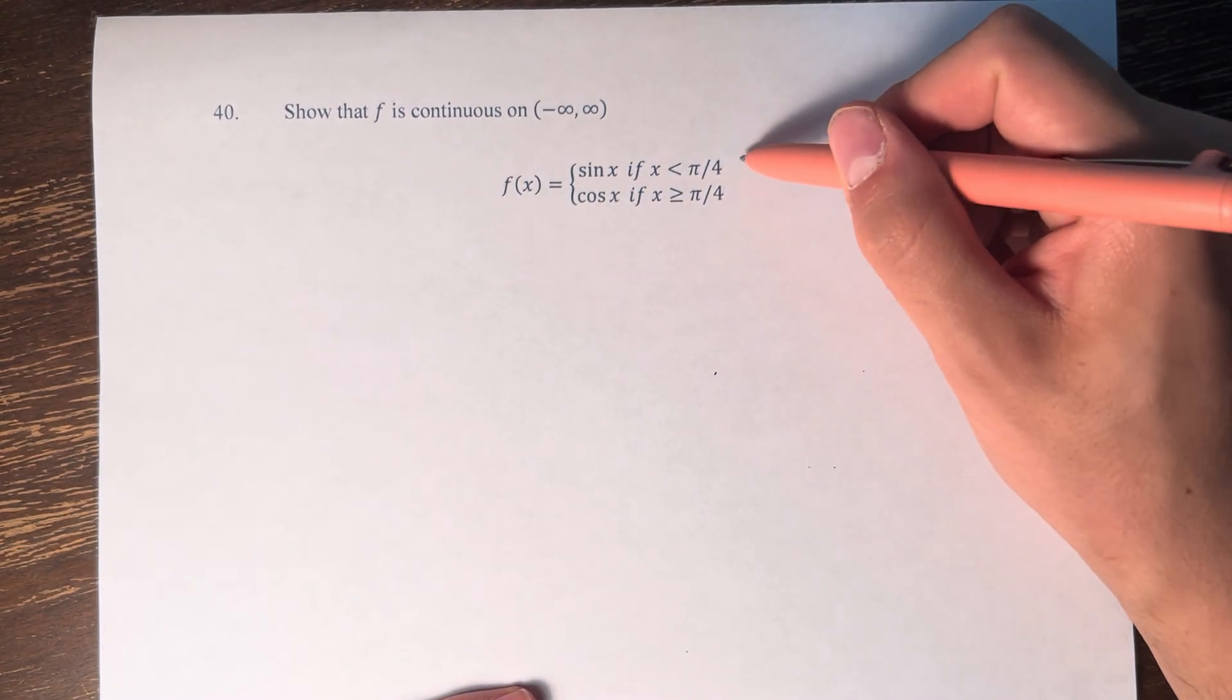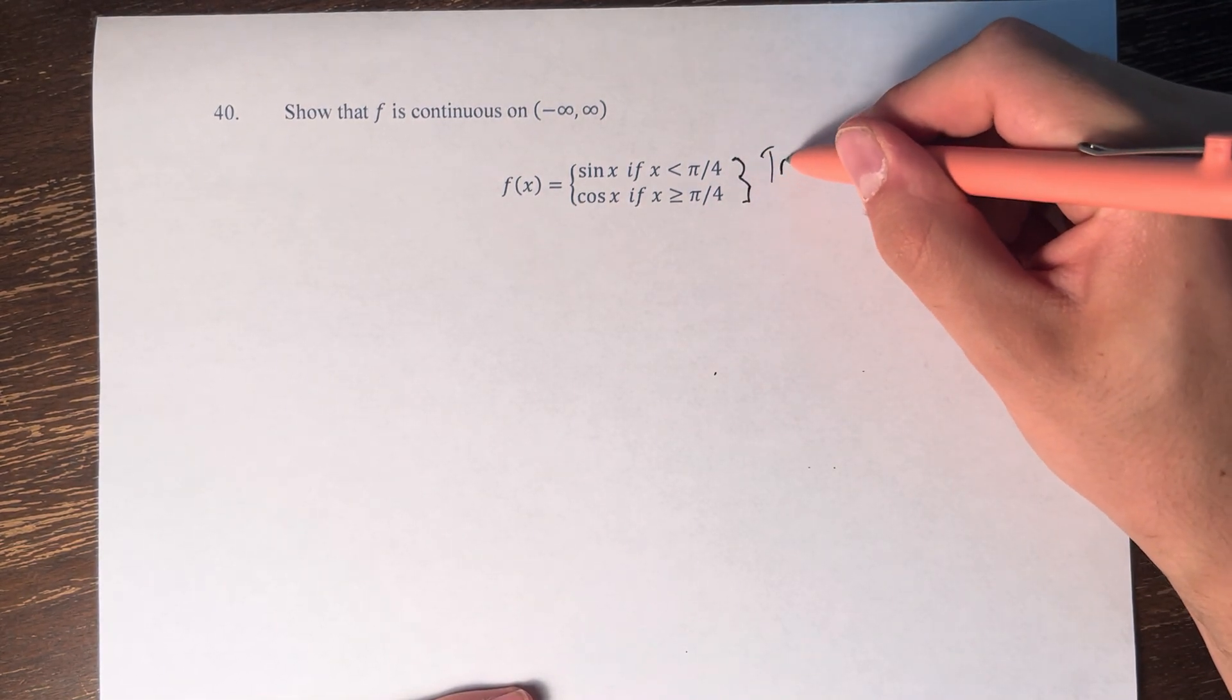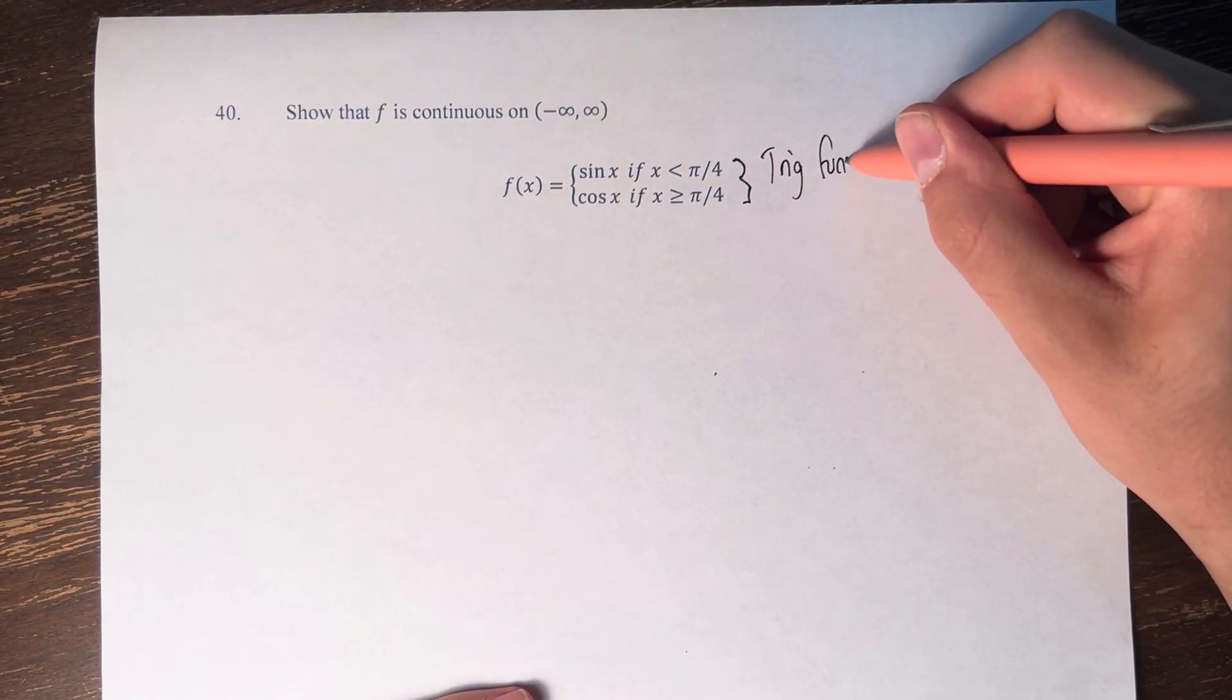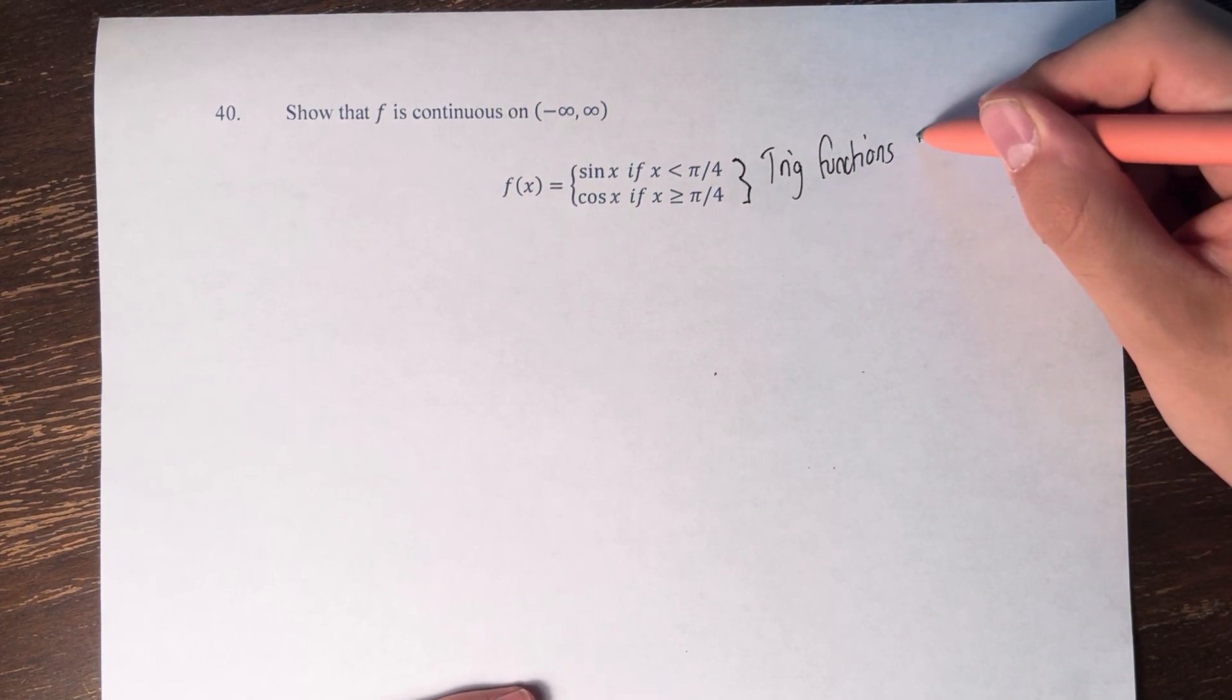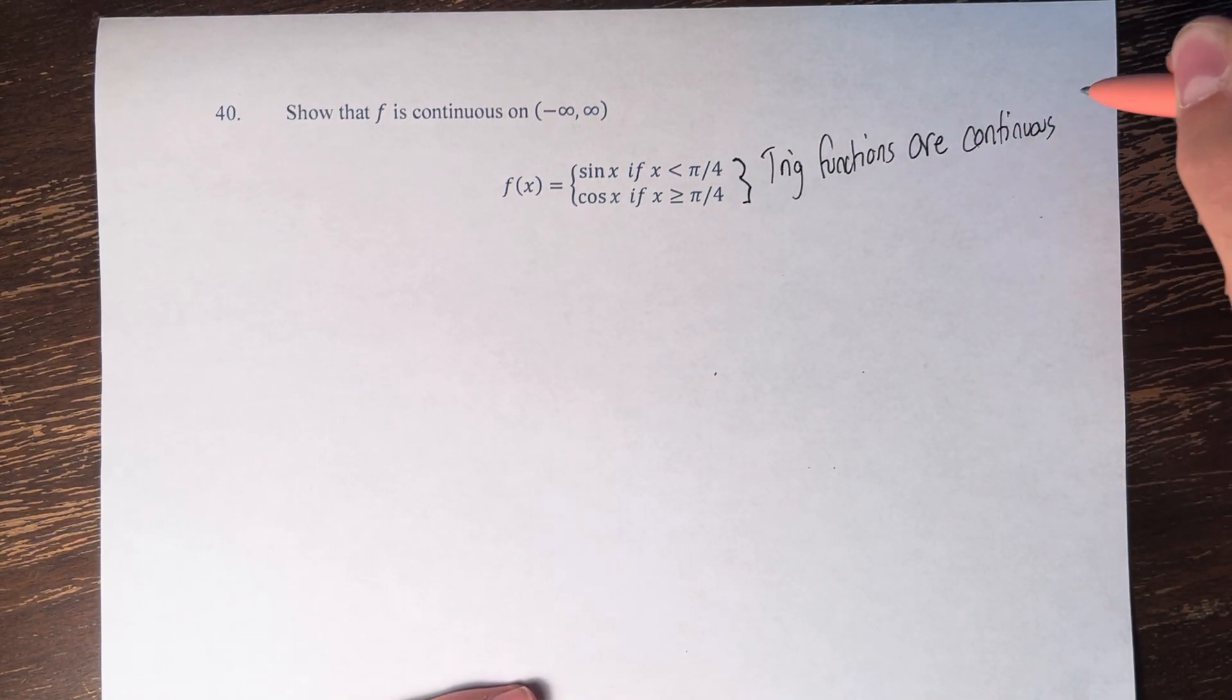So we know from theorem 7 that both of these functions, which are trigonometric functions, are continuous over their domains.